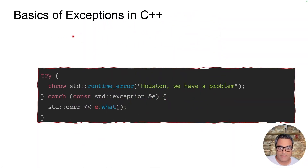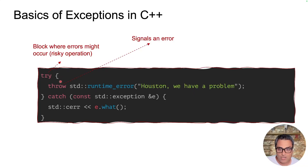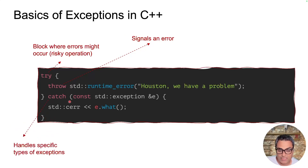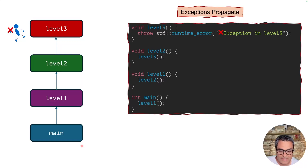Let's review the basics of exceptions in C++. When you have a piece of code that is performing some risky operation, you put that in a try-catch block. If an error happens, you throw an exception to signal that an error happened. You can catch that exception in the catch block and also specify which exception you are catching, and then handle it. In C++, exceptions propagate through the call stack. In this example, I have a main function that calls a function called level 1, which calls level 2, which calls level 3, and level 3 is throwing an exception.